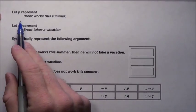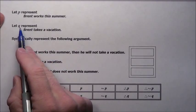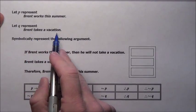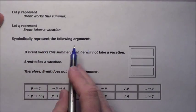We like these. These are nice and easy. Let P represent 'Brent works this summer.' Q represents 'Brent takes a vacation.' Symbolically represent the following argument.